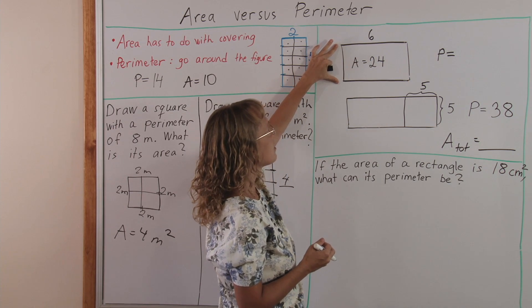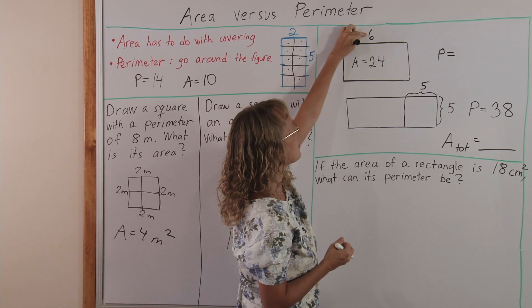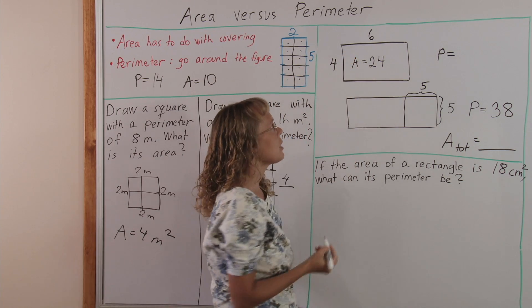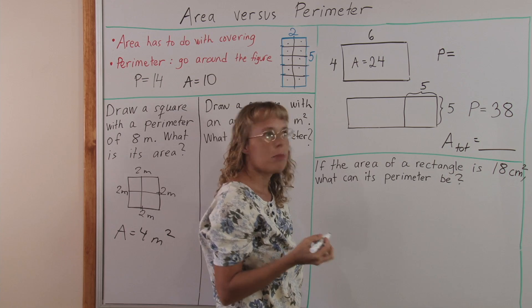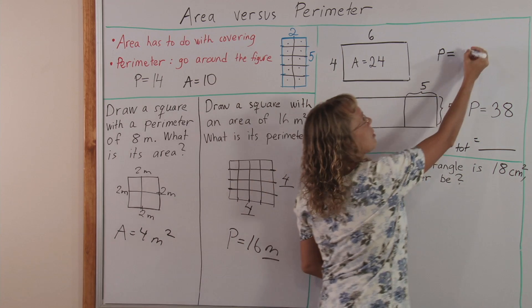The unknown side times six is twenty-four. This times this is twenty-four, so the side must be four units, and then we can take the perimeter. Four and six is ten, and then another ten here, so the perimeter is twenty units.